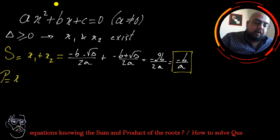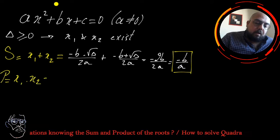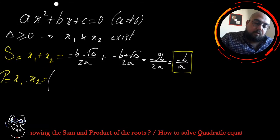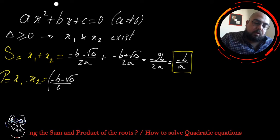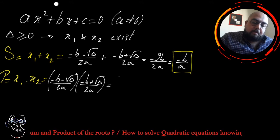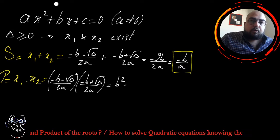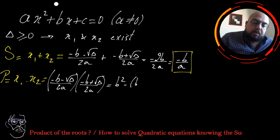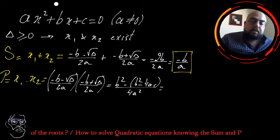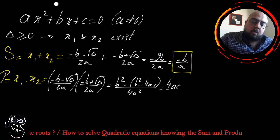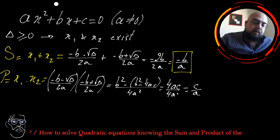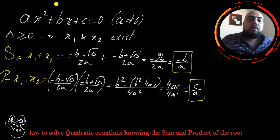Now what about the product? The product equals x1 times x2. It will be equal to minus b minus square root of delta over 2a, times minus b plus square root of delta over 2a. The answer will be b squared minus delta, and delta is b squared minus 4ac, all over 4a squared. So b squared minus b squared cancels out, and whatever remains is 4ac over 4a squared. The final result is c over a. So this is the product of the roots whenever they exist.